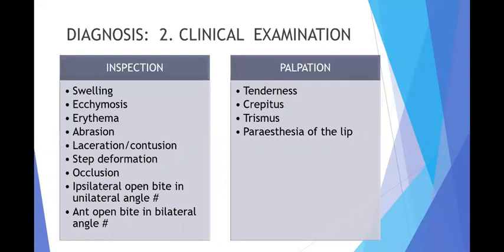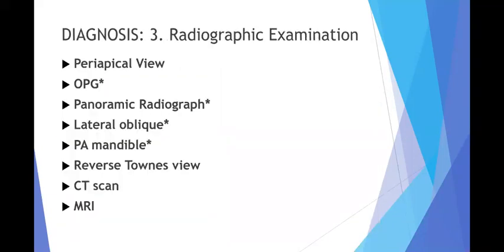On palpation, we check for tenderness, crepitus, trismus, and paresthesia of the lip. For radiographic examination, the methods used include the periapical view, OPG (panoramic radiograph), lateral oblique, PA mandible, reverse Towne's view, CT scan, and MRI. Since we are answering specifically for the angle of the mandible, OPG, panoramic radiograph, lateral oblique, and PA mandible must be mentioned at any cost, as these record the angle of the mandible most effectively.